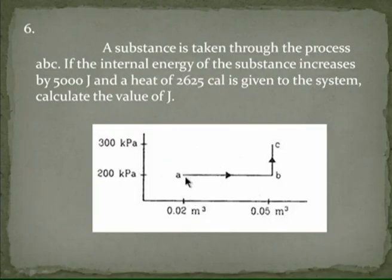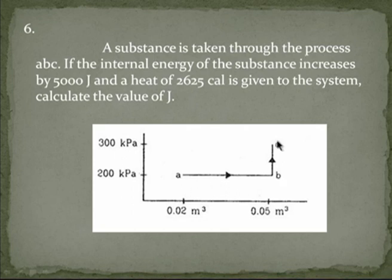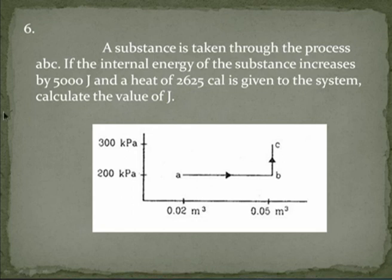So far we discussed about the cyclic process. Now if we observe this, the process starts from A, goes to B and C, but doesn't come back to A. So this process we are calling a non-cyclic process. Here the substance is taken through process ABC, and the internal energy of the substance increases by 5000 joules. Heat of 2625 calories is given to the system. Calculate the value of J. First, we have to find out DW.